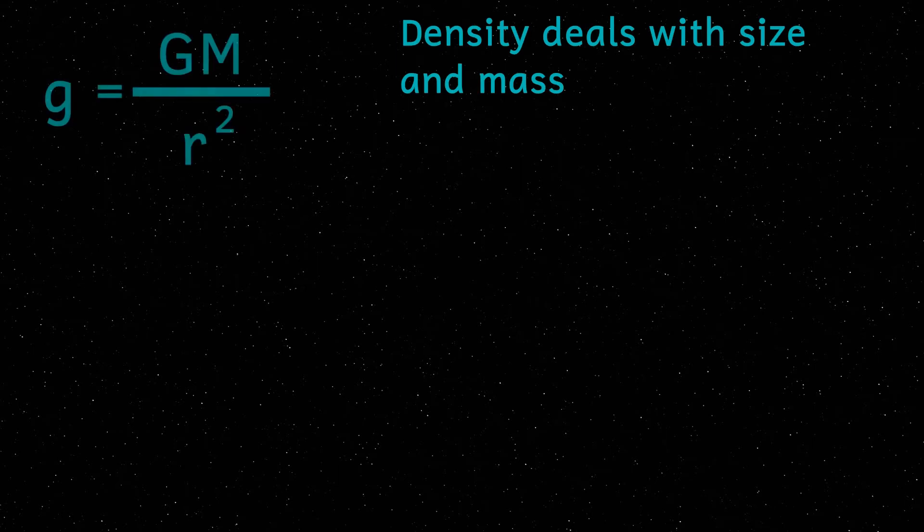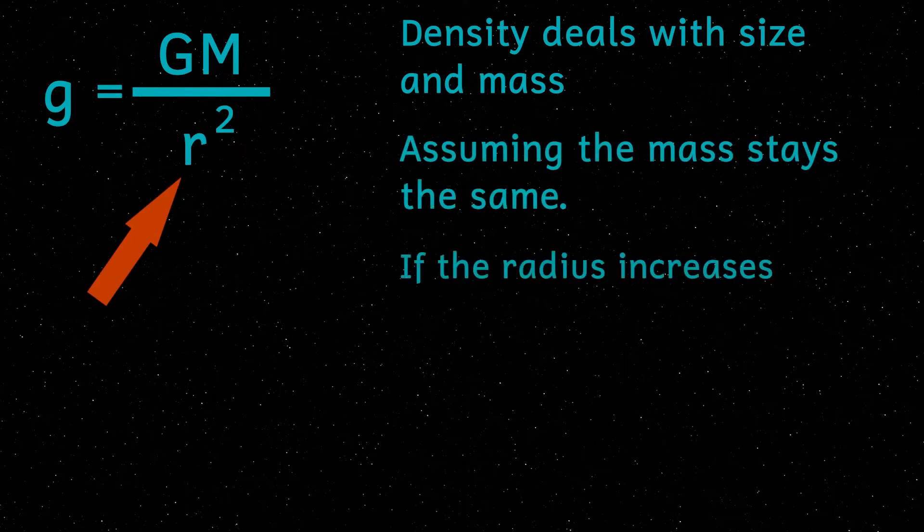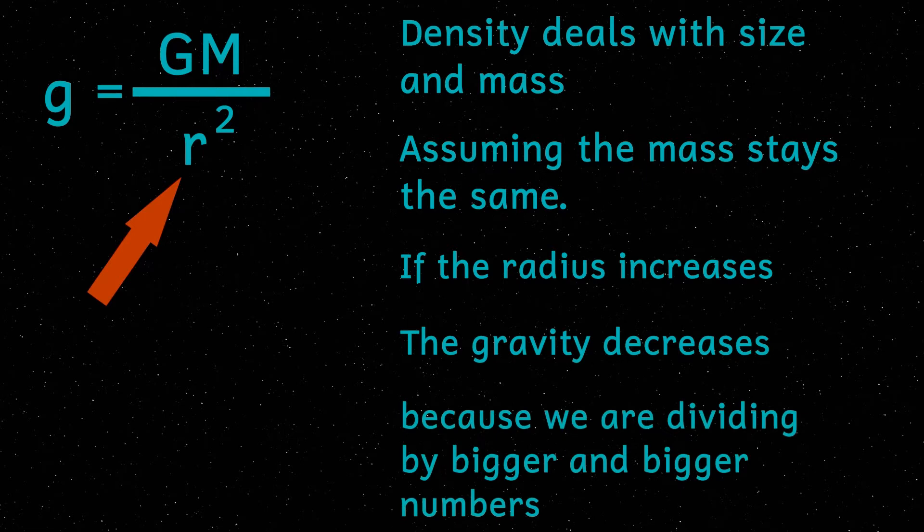The equation that allows us to calculate surface gravity has here in the equation the radius of the body. As this number, the radius gets bigger, then the gravity decreases because we are dividing by bigger and bigger numbers.